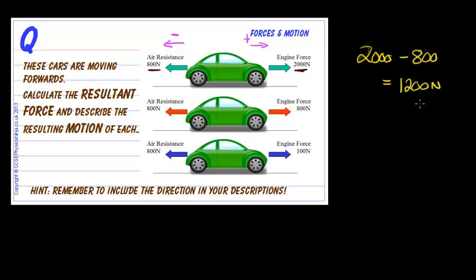Remember that forces are vectors. We must state the direction. I gave you a little hint down here about the direction in your descriptions. So the first case we've got 1200 Newtons resultant force, resultant force to the right.